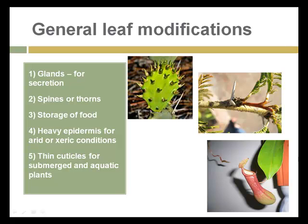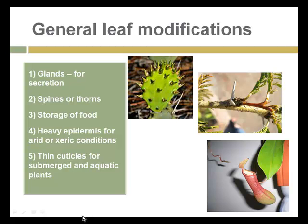Additional leaf modifications include glands, spines, thorns, and food storage. A unique example is the pitcher plant, whose leaf attracts insects to crawl inside, where they're held in place by downward-pointing hairs until they reach a pool of digestive fluid at the bottom. The pitcher plant then digests the insect and uses the proteins for its own development and metabolism.